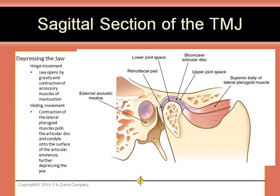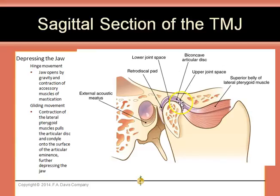In this sagittal section of the TMJ, one can see the external acoustic meatus, the retrodiscal pad which contains blood vessels and nerves, and the biconcave articular disc. The space below the articular disc is called the lower joint space, while the space above the articular disc is called the upper joint space. The superior belly of the lateral pterygoid muscle can be seen attaching to the articular disc.